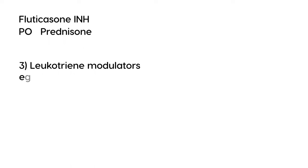The third type of asthma medication is leukotriene modulators, used to help augment therapy. The most commonly used in the US and Canada is montelukast, given as a pill — PO.